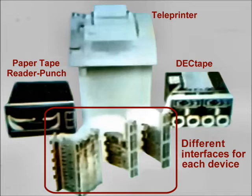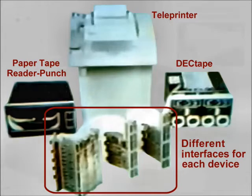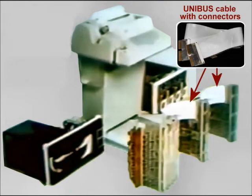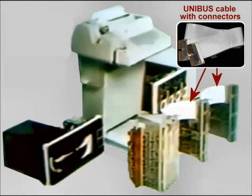For example, the interface for our paper tape reader punch cannot be used to control the deck tape. By the way, have you noticed the large, flat cable that runs from one interface unit to the next? That's the PDP-11 unibus that we've been talking about. It's the only common path between our interface units, memory, and the processor. That's all we care to say about I/O devices in this first study unit.